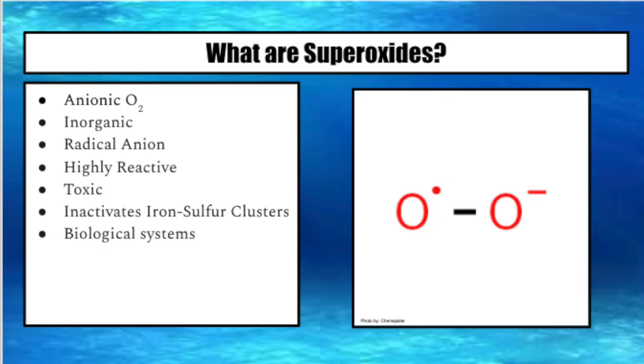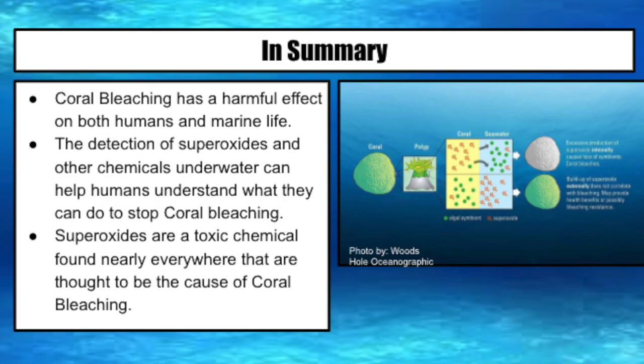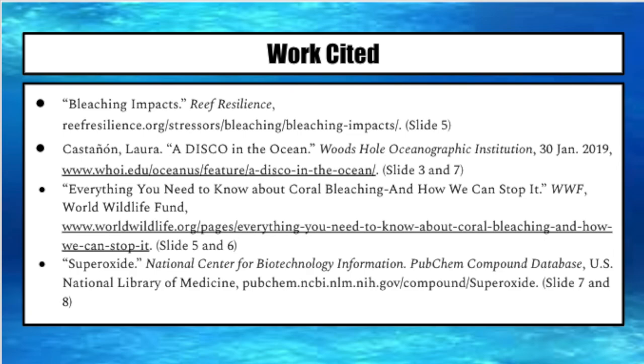In summary, coral bleaching has a harmful effect on both humans and marine life. The detection of superoxides and other chemicals underwater can help humans understand what they can do to stop coral bleaching. Superoxides are a toxic chemical found nearly everywhere that are thought to be the cause of coral bleaching. Thank you for watching my presentation, and thank you for participating in the Honors Chemistry 2020 lecture series.